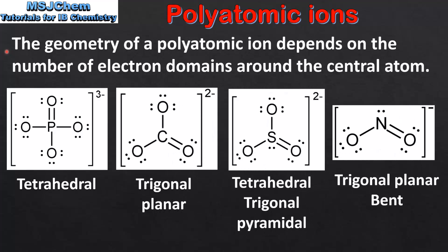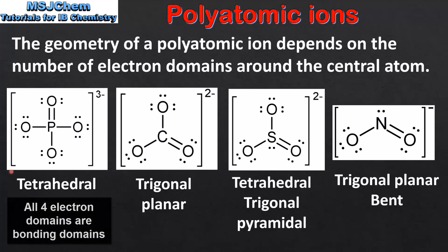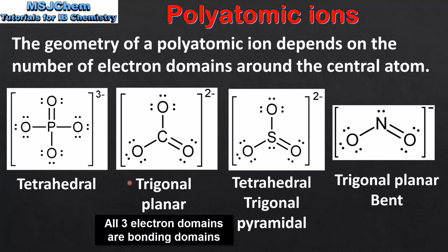Next we look at electron domain and molecular geometry. The geometry of a polyatomic ion depends on the number of electron domains around the central atom. On the left we have the phosphate ion, which has four electron domains around the central phosphorus atom. The electron domain geometry and the molecular geometry are both tetrahedral. Next we have the carbonate ion, which has three electron domains around the central carbon atom. Both the electron domain and the molecular geometry are trigonal planar.